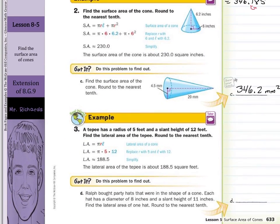And now, in our last real-world example here: a teepee has a radius of 5 feet and a slant height of 12 feet. Find the lateral area of the teepee, round to the nearest tenth. The lateral area, going back to our previous formula, is pi R L. Substitute in 5 for the radius and 12 for the slant height, and round to the nearest tenth — you get 188.5 square feet.